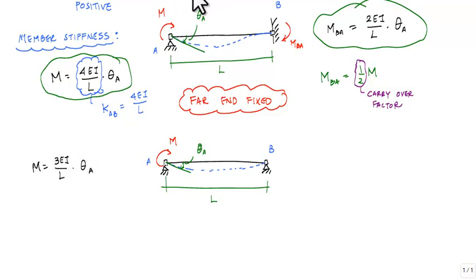And this relationship would be that M is equal to 3EI over L times theta A. And now, this would be my stiffness. This would be KAB in the case where my far end is pinned. And I would have no carryover factor because there's no moment at point B. So the carryover factor for this case is equal to 0.